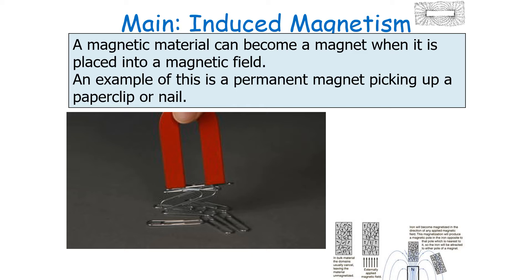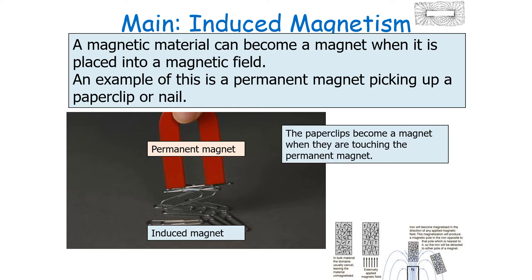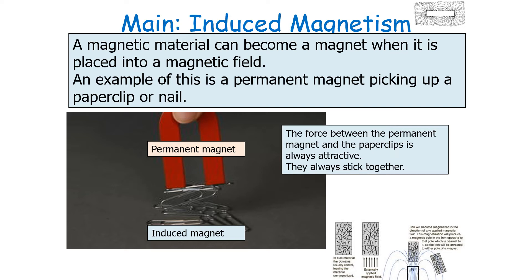A magnetic material will become a magnet when it's placed inside a magnetic field. With your permanent magnet, the magnetic materials inside its magnetic field will become induced magnets. So the paper clips become magnets when they're touching the permanent magnet. This is shown in this example because paper clips are picking up other paper clips — they must have a magnetic force acting from them. The force between the permanent magnet and the paper clips is always attractive, so they always stick together.